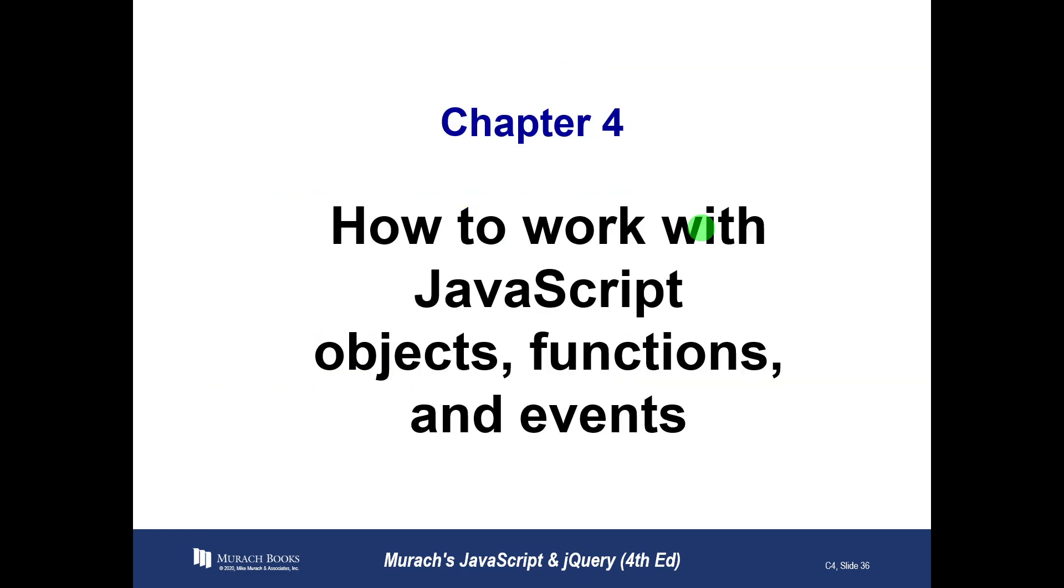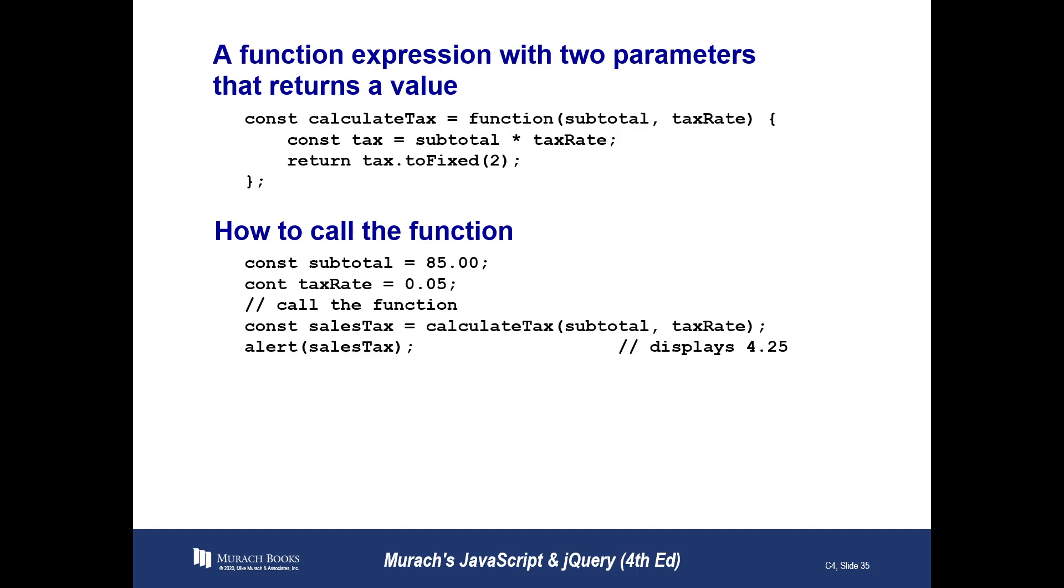Here is an example of that. We're calling a function called calculate tax. When I actually call the function calculate tax, I'm passing in the 85 and .05. Those are the arguments that I'm passing, and those values get copied into these parameters. So the variables inside the function are the parameters. The values we pass into those functions are called the arguments.